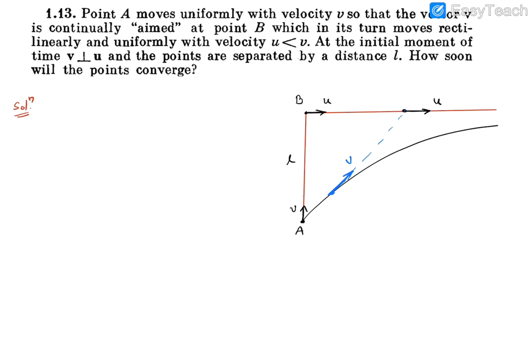So if we go ahead with the tentative picture we drew, this is the direction at some later time. Assume that this is at theta angle from horizontal. This is point A and point B, and this is the separation between them. Now initial separation was L, this separation is going to be less than L. Over time this separation has to become zero. When this separation becomes zero, then these two will converge.